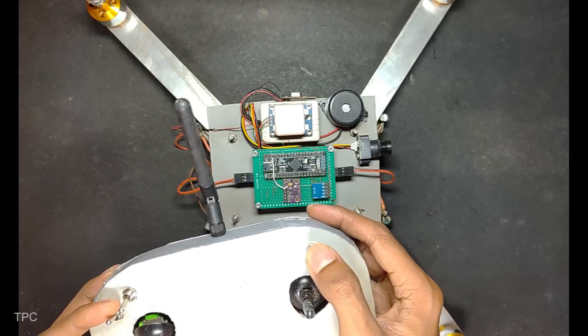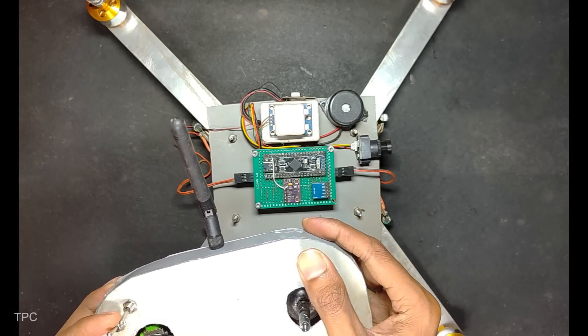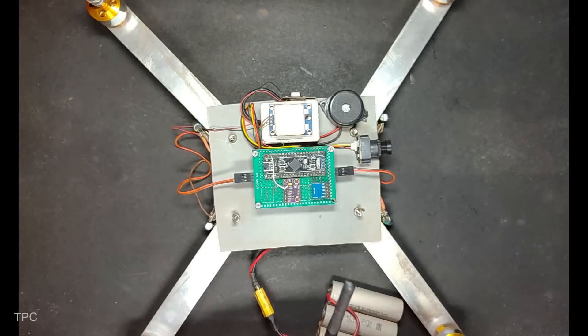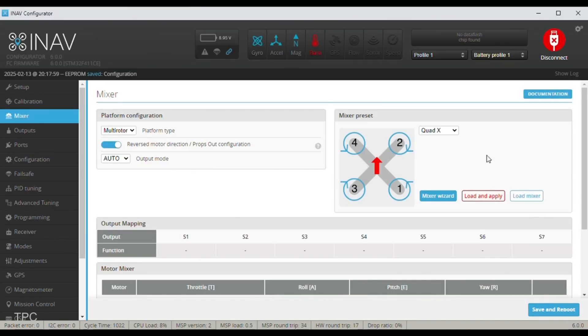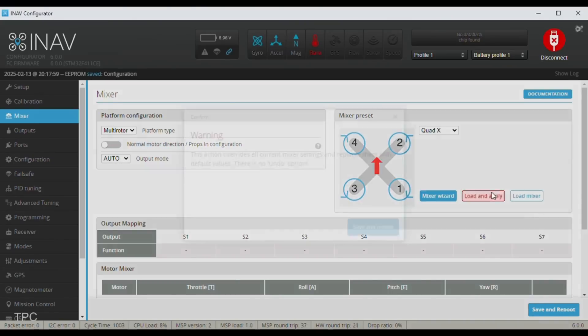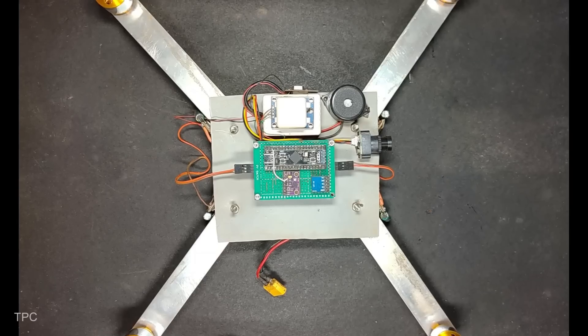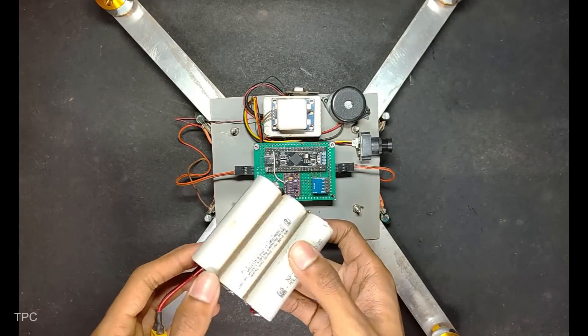Unlike off-the-shelf transmitters, this drone features a custom-built control system delivering a 1.5-kilometer range with complete customization. The drone itself is built from aluminum square pipes, striking a balance between durability and weight.